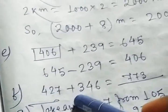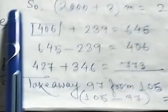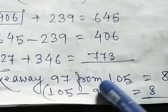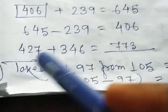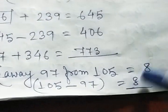Next, simple addition. Answer will be 773. Next, G, take away 97 from 105. Take away means subtract. So, 105 minus 97. Answer will be 8.